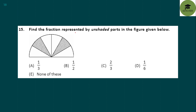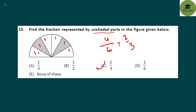Find the fraction represented by the unshaded parts in the figure given below. There are 6 total parts and 4 are unshaded, so the fraction is 4/6, which reduces to 2/3. Option C is your correct answer.